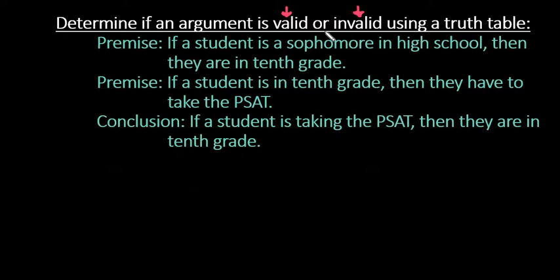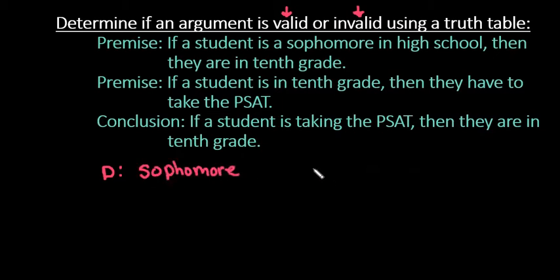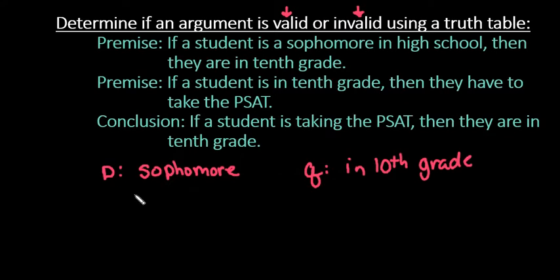In order to do this with a truth table, you first must define each of the statements symbolically by setting up a variable to represent each statement. I'm going to let P represent the statement 'is a sophomore,' Q represent 'they are in 10th grade,' and since we have a third statement, R will represent 'take the PSAT.'